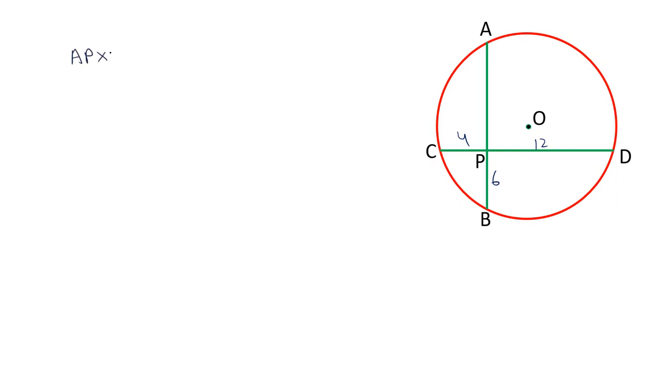In this case, AP and PB are the segments of AB and PC and PD are the segments of CD. AP we don't know. The length of PB is 6, length of PC is 4, length of PD is 12. So, the length of AP will be 48 upon 6, that is 8.